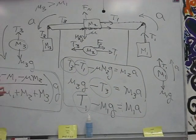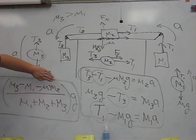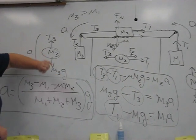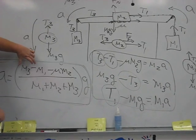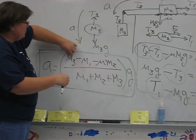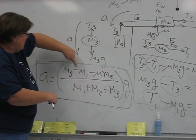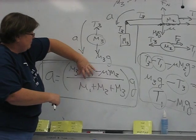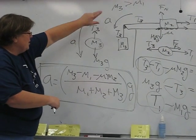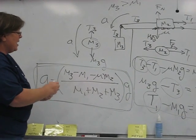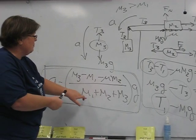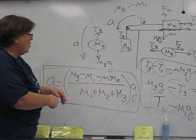And again, you can check the limiting cases. If there were no friction, there would be no this term. And let's see, I don't know, if M3 were huge and M1 were pretty insignificant, then this whole system would pretty much move at a rate of G if M3 were significantly bigger than both M1 and M2.